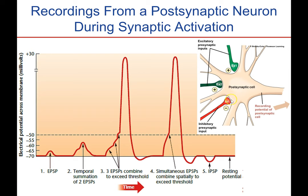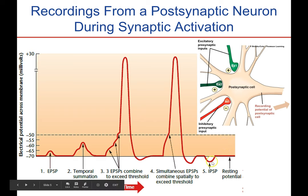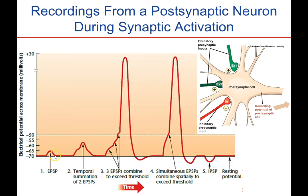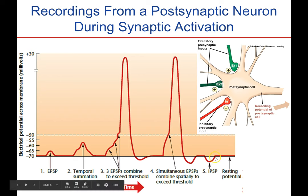When the inhibitory neuron has an action potential, it travels down the axon, reaching the terminal button and causing the release of a neurotransmitter — a chemical that binds to receptors on the post-synaptic cell, which decreases the voltage and makes it more negative. So here's an IPSP, or inhibitory post-synaptic potential. Notice that in both cases the voltage returns to the resting potential afterwards — it's a temporary depolarization or, in this case, hyperpolarization.